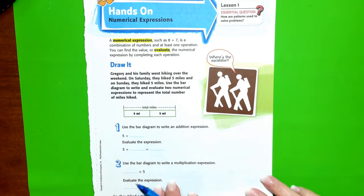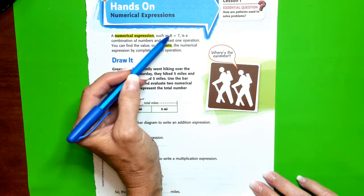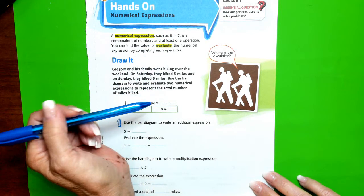A numerical expression does not have an equal sign. It will have operations: addition, subtraction, multiplication, division.